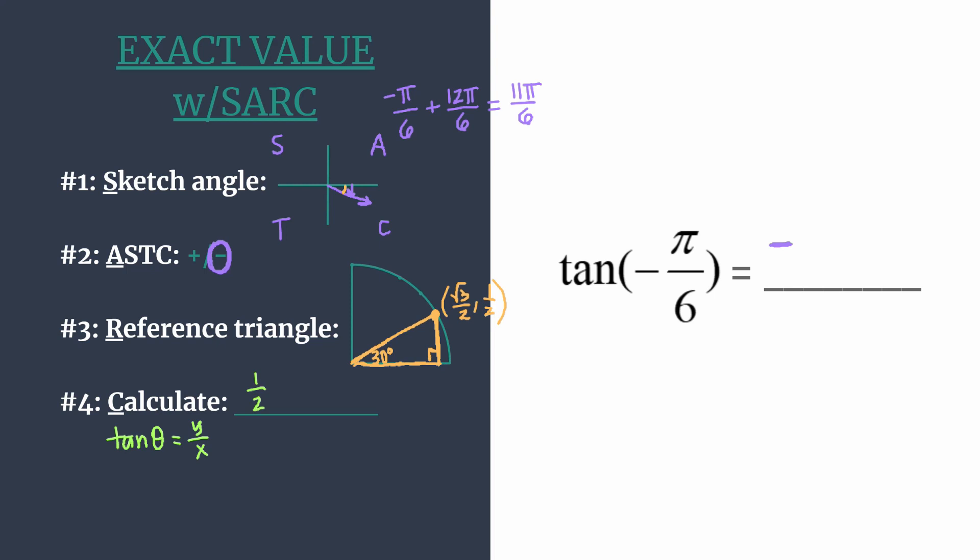We'll write 1/2, and instead of dividing by the fraction, we'll multiply by the reciprocal, which is 2 over √3. Since these are fractions, we can cross-cancel those 2s—they have a common factor of 2. We're left with 1 over √3.